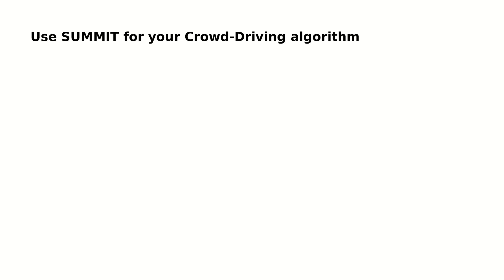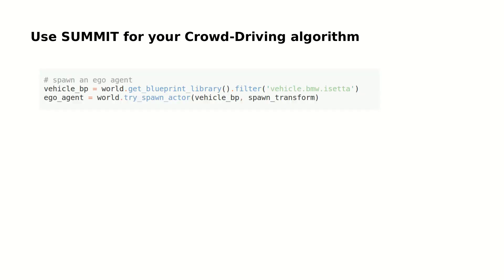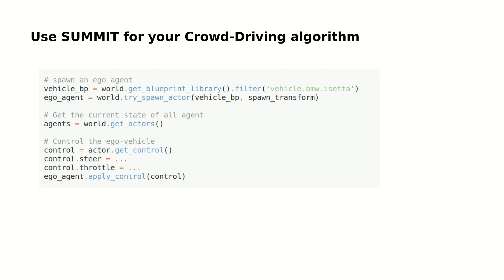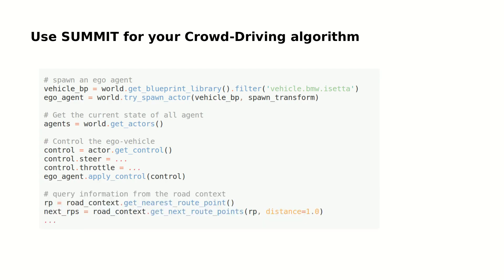Using SUMMIT for a crowd-driving algorithm is simple. With a few lines of Python code, users can easily spawn an ego vehicle, get the state of all agents, send controls to the ego vehicle, and query information from the road context.